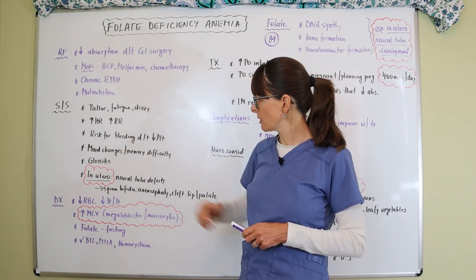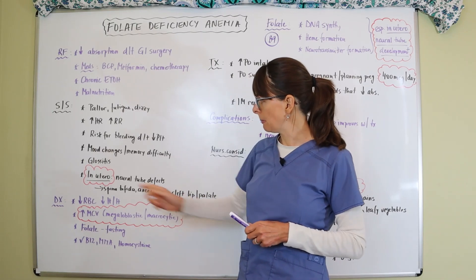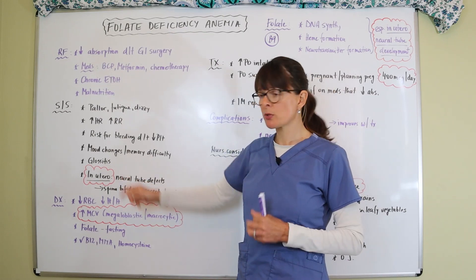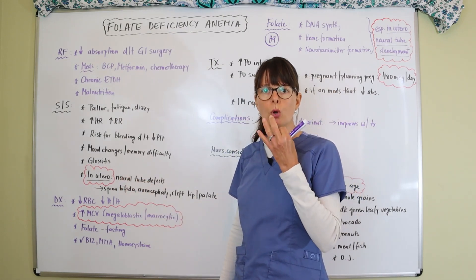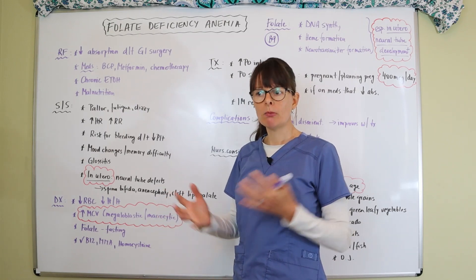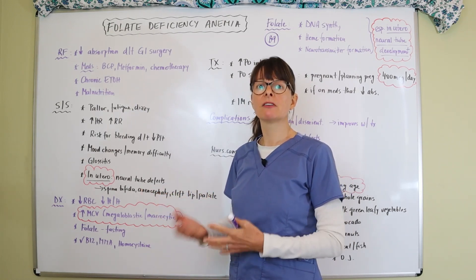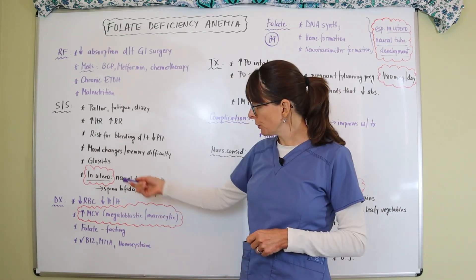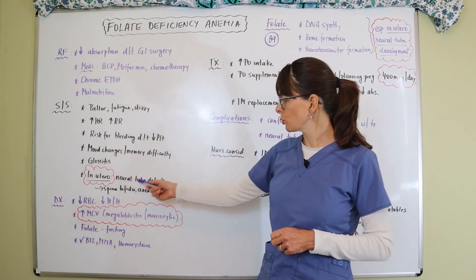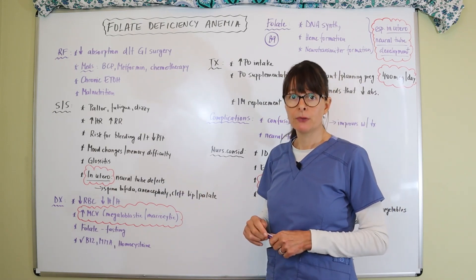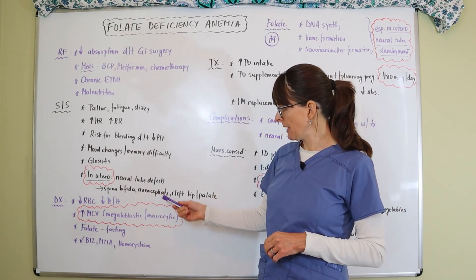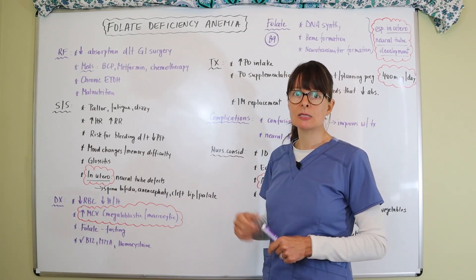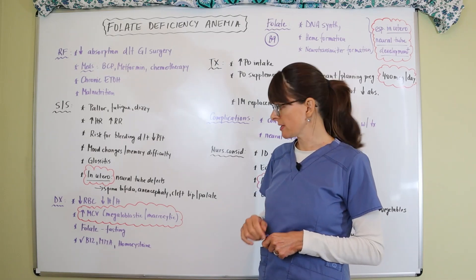They might be at risk for bleeding because of low platelet formation. There might be mood changes and memory difficulty, and then glossitis — a red, beefy, swollen tongue — which is a telltale sign for many anemias including folate deficiency. In utero, folate deficiency can lead to neural tube defects, specifically spina bifida, anencephaly, cleft lip and cleft palate, as well as spasticity of the extremities.